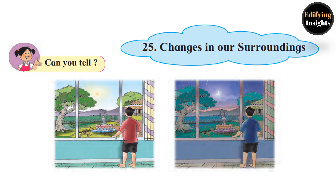We can see things around us clearly during the day. Why can't we see them clearly at night? Children, look at the pictures — the first picture shows daytime and the second picture shows nighttime. During daytime we can see things around us clearly, but during nighttime we cannot see them clearly. Do you know the reason for that?